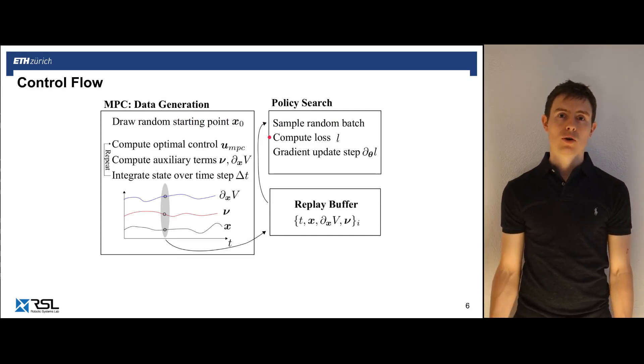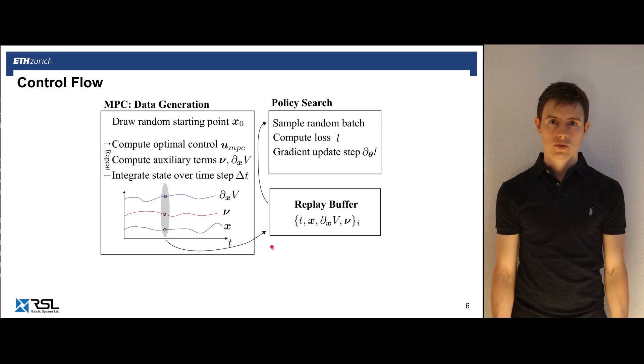The control flow of our algorithm is as follows. The MPC is on the data generation side. So it works by generating a random sampling, we sample a random starting point, compute the optimal trajectory for a predefined horizon, and then take the necessary values that allow us to compute a Hamiltonian into a replay buffer. So for example, we sample at a fixed frequency state, Lagrange multipliers, value function derivatives. Then from this replay buffer, the MPC net algorithm, the policy search module, samples a random batch of those tuples, computes the control Hamiltonian for those states that have been sampled, and performs a gradient descent step. Pretty much like any supervised learning algorithm would do.